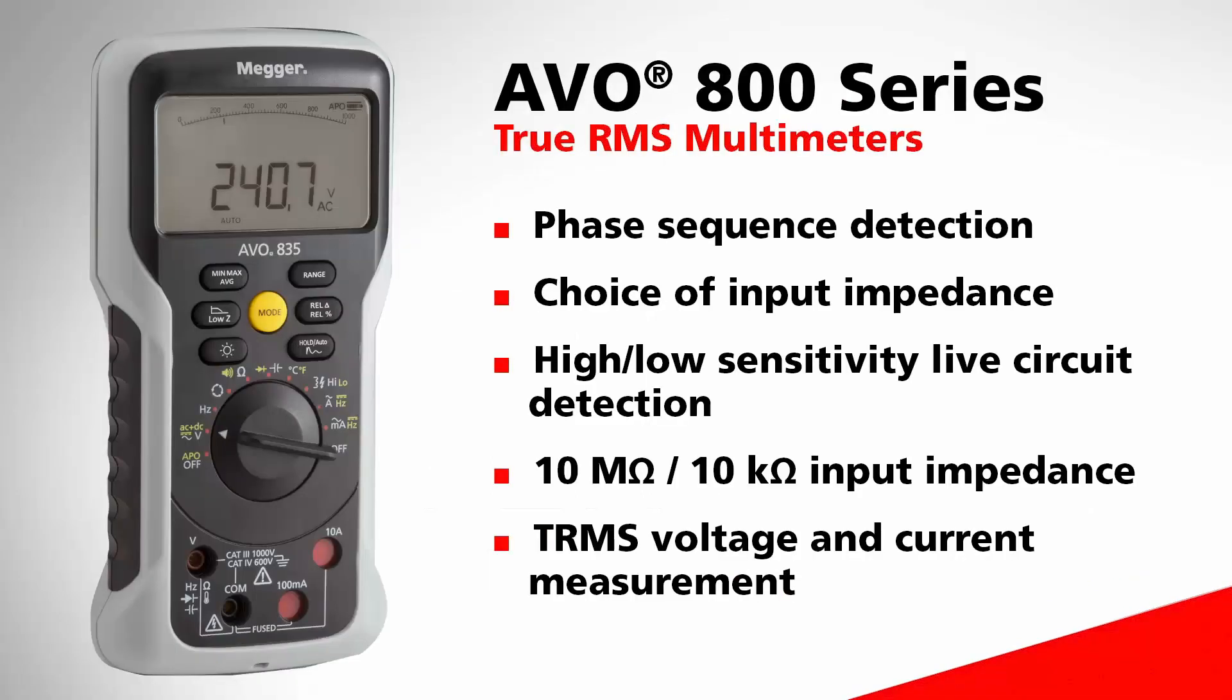This lecture features the Megger AVO835 digital multimeter. The AVO800 series multimeters are as reliable and accurate as the historical AVO units, but now come with a range of features to meet today's standards of electrical testing. For more information on the AVO800 series multimeters and other Megger products, please visit us.megger.com.